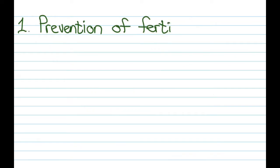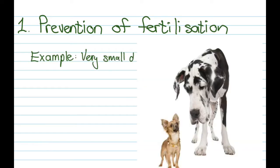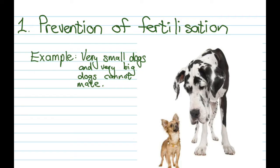The first way that this can be prevented is they prevent fertilization from taking place at all. An example here could be something like a really small dog and a really big dog — they cannot even mate, so they will not reproduce any offspring.